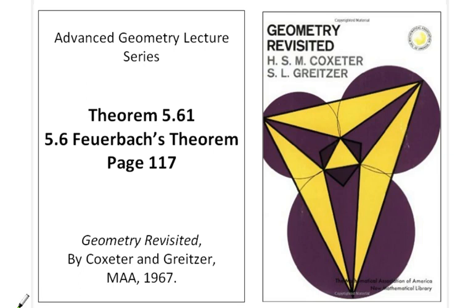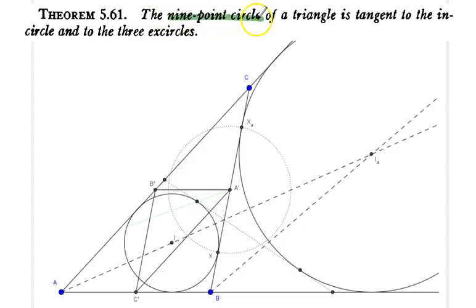The theorem is also known as the Feuerbach Theorem. Here's the statement and a simple view of this celebrated theorem: The nine-point circle of a triangle, in our case triangle ABC here, is tangent to the incircle and also the three excircles.